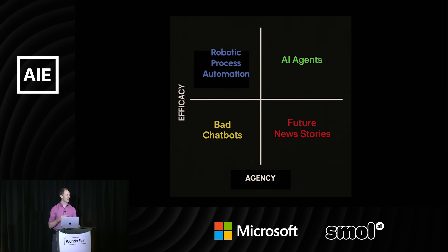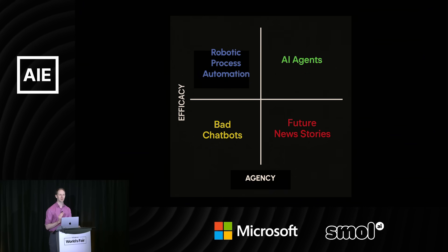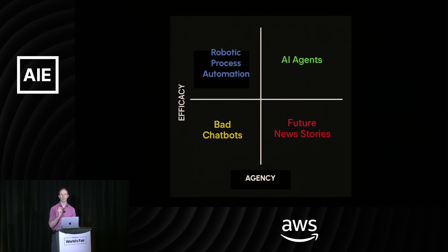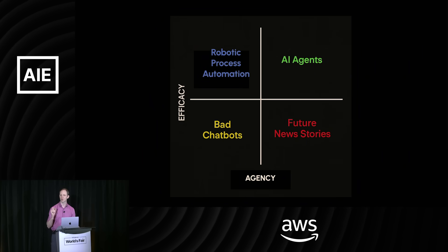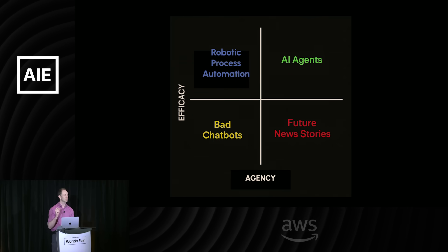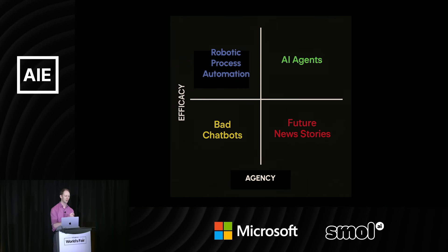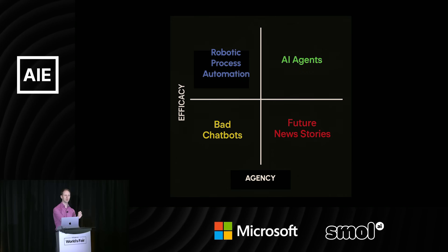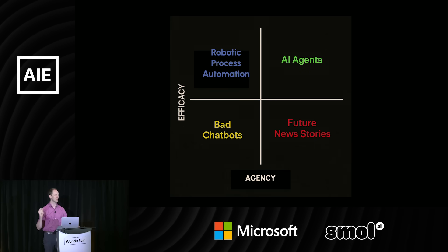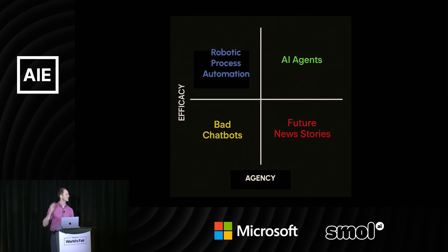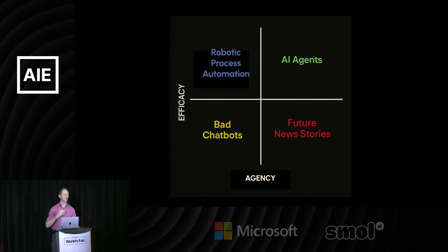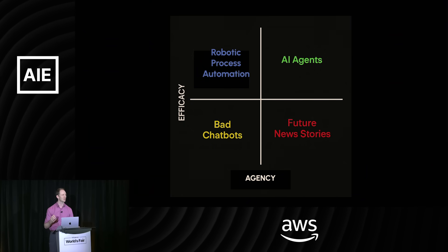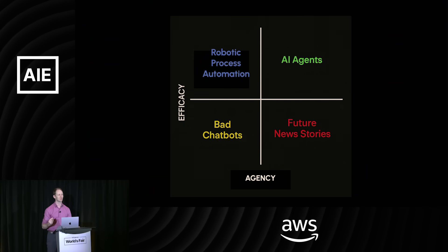I would add that there's a second axis we should consider, which is the effectiveness of the system. I wouldn't think about agency or the agenticness of your system as a goal in and of itself — it is a tool to help you solve problems. A classic example of something with a very low degree of agency but a really high degree of efficacy is robotic process automation.